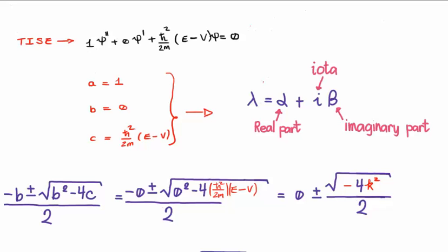Of course, if beta is 0, then lambda is simply a real number, and vice versa, it can sometimes be a completely imaginary number.